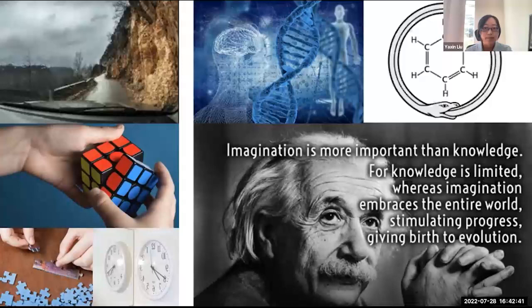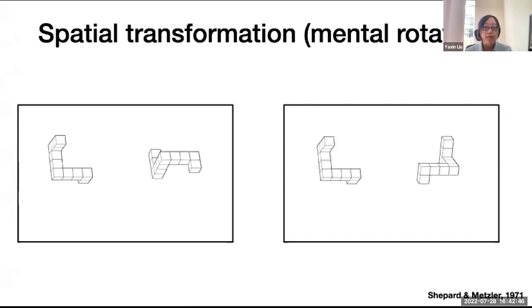One cognitive task that has been closely linked to the visual origins of spatial processing is called mental rotation. In this classic task, you mentally represent two objects on screen. If you are able to rotate one object into the other in your mind, then these are the same objects. If not, then these are the mirrored objects, like your left and right hands.